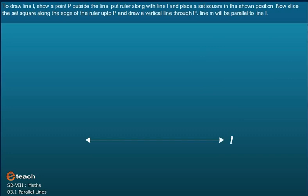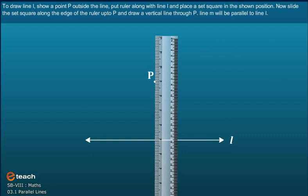To draw line L, show a point P outside the line. Put the ruler along with line L and place a set square in the shown position.